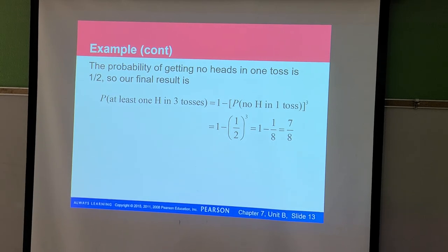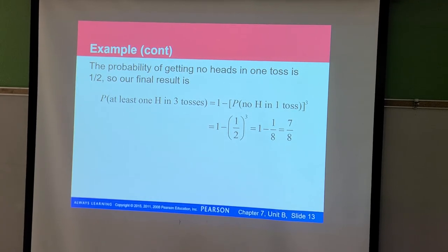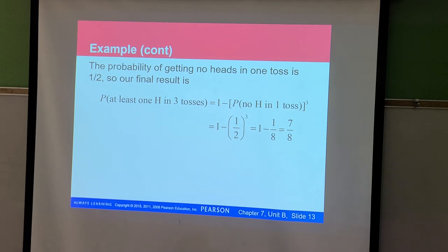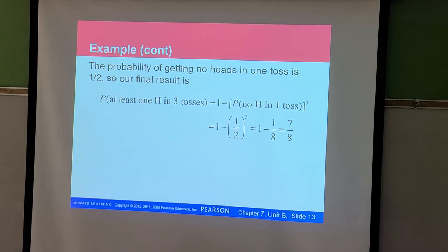When doing the Pearson homework, pay attention to whether they want the answer as a fraction or a decimal — sometimes both are accepted. Also, to use the at least once rule correctly: first find the probability of the event happening, then find the NOT probability by taking one minus that value. That NOT probability is what you raise to the power of N in the formula.